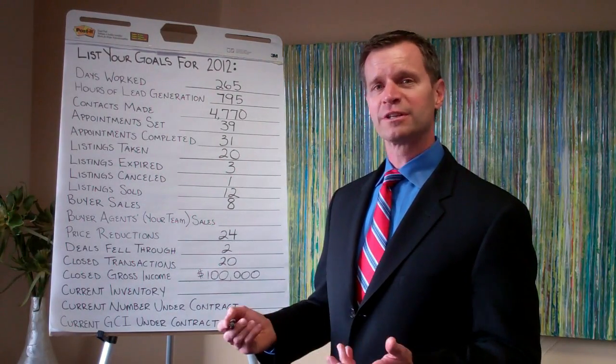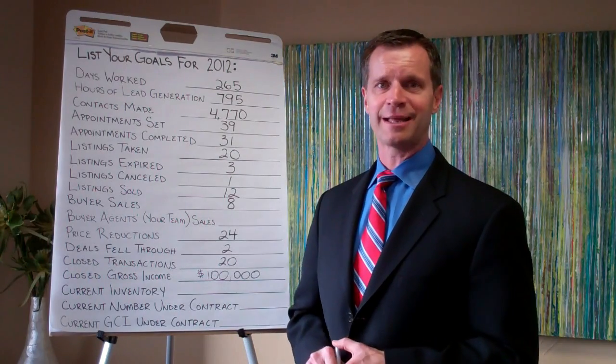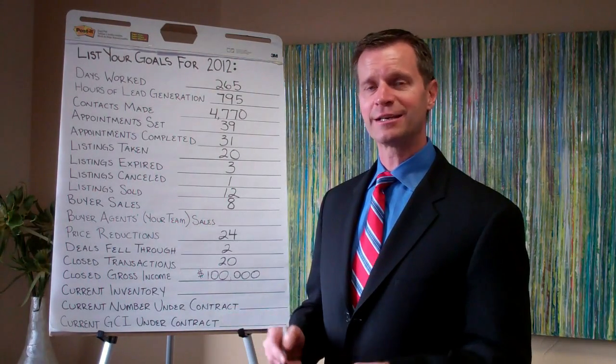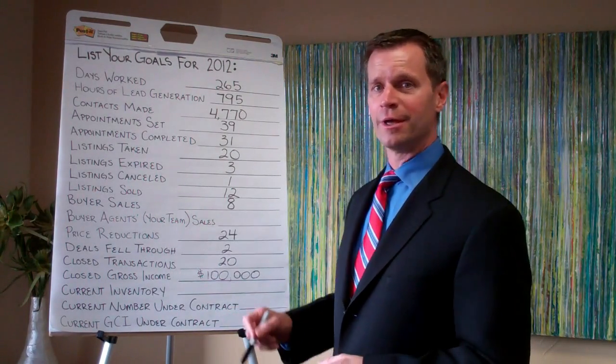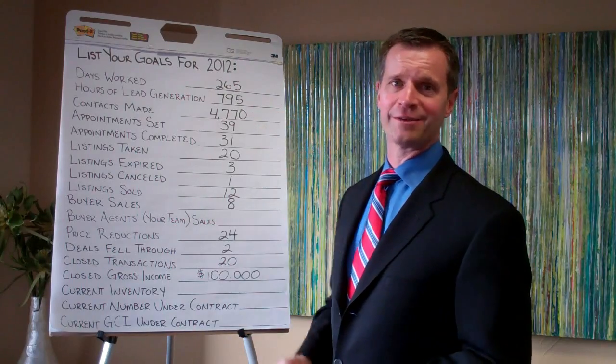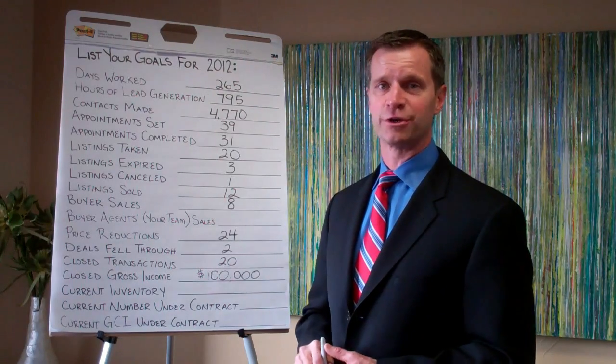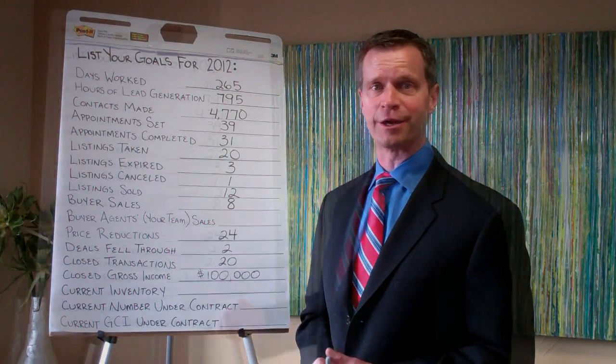Then we're going to say, let's say you average six contacts per hour. If you take six contacts per hour times 795 hours, you're going to end up having 4,770 contacts you'll make throughout that year.